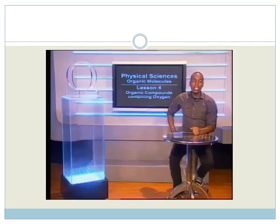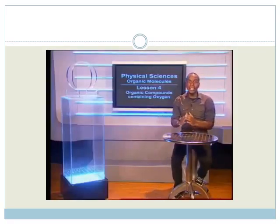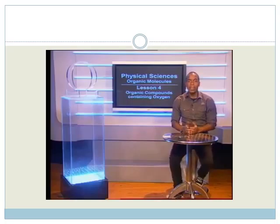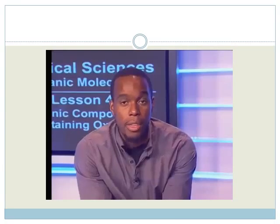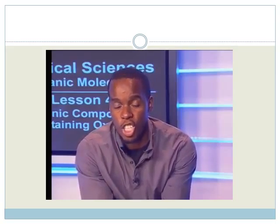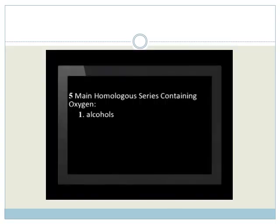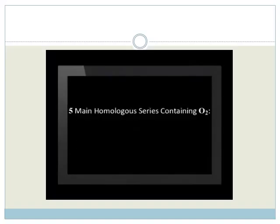Welcome, Grade 12s, to this session on organic molecules. In this lesson, we now turn to other organic compounds that are not hydrocarbons. There are 5 main homologous series which contain oxygen. These are the alcohols, carboxylic acids, esters, aldehydes, and ketones. In this lesson, we will focus on the alcohols, acids, and esters.